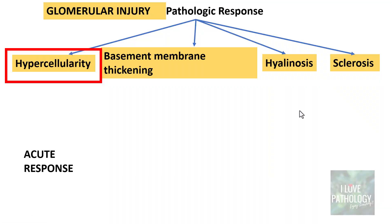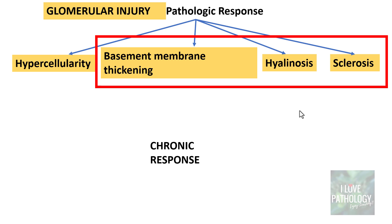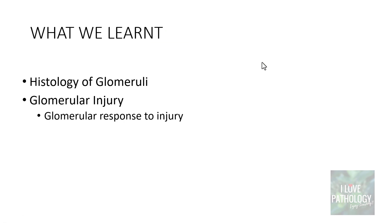To summarize: hypercellularity is an acute response, whereas basement membrane thickening, hyalineosis, and sclerosis are chronic responses. So today we learned the histology of glomeruli and in detail about the response of the glomeruli to injurious agents.